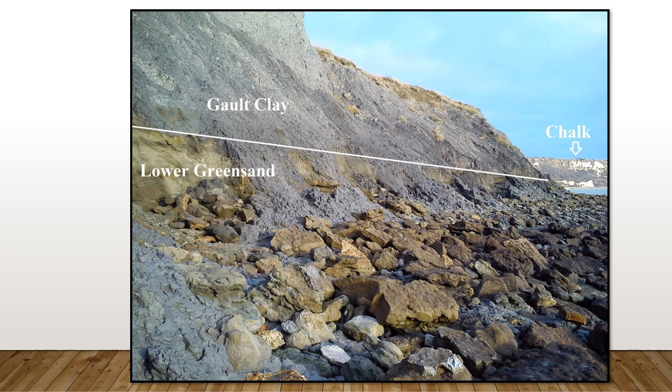Here we can see the three main rock types that you will see at Folkestone. There's the Lower Greensand on the bottom, the chalk on the top, and in between is the Gault Clay. It's important to remember that usually the oldest rocks are at the bottom and the youngest rocks are at the top.